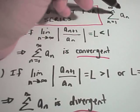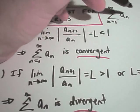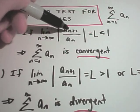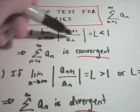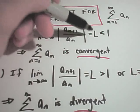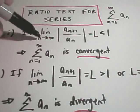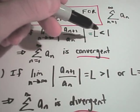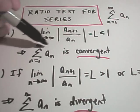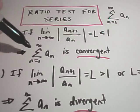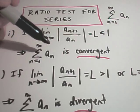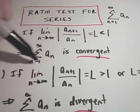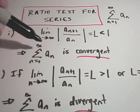The ratio test says this: basically, everywhere there's an n in your series, you replace it with n plus 1, and then you divide that by the original terms in the series. It says if the number you get out when you take the limit as n goes to infinity is smaller than 1, you can claim that the original series is convergent — it's actually called absolutely convergent, but the main thing we're worried about is that this original series is convergent.